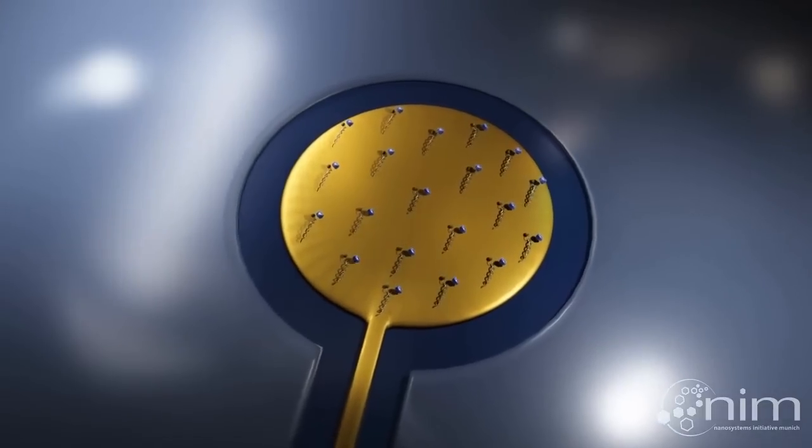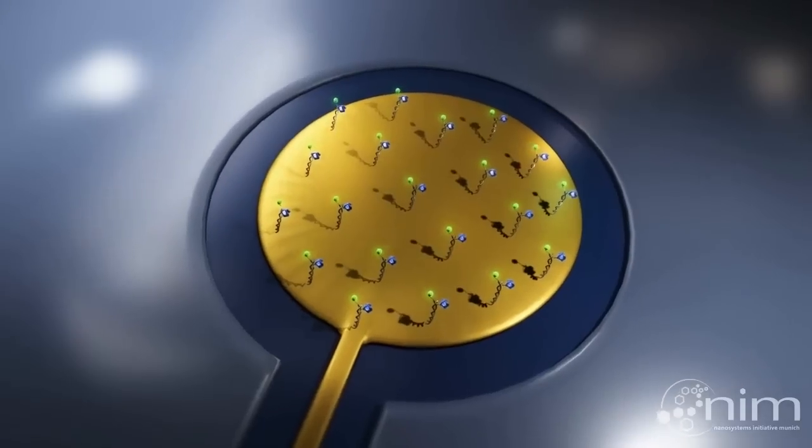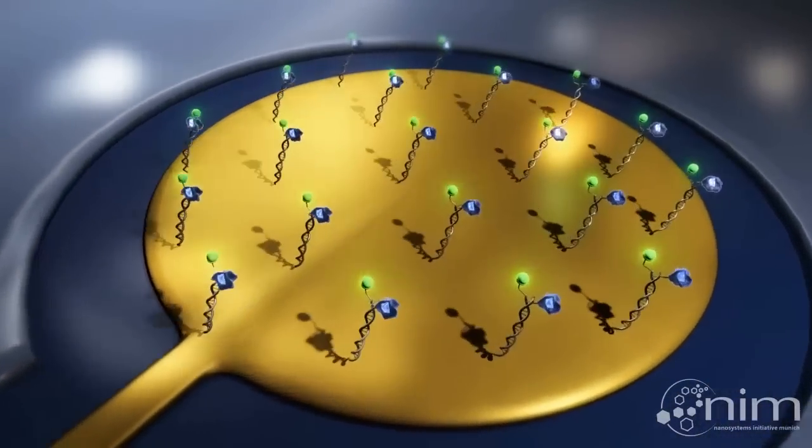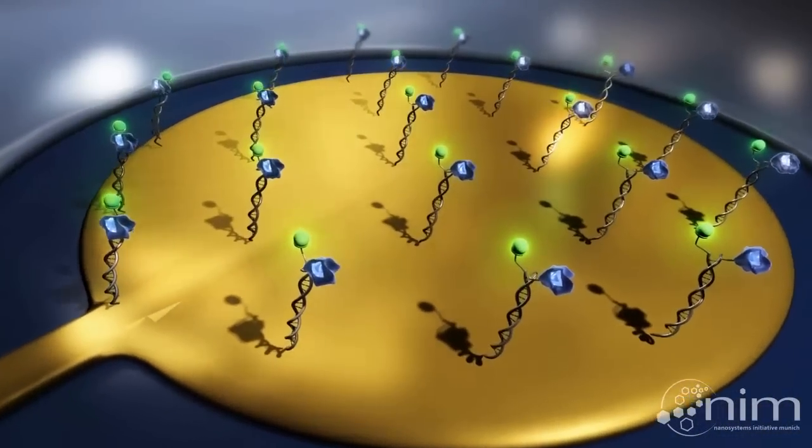As the SwitchSense analyzer applies alternating voltages to the electrode, the negatively charged DNA is repeatedly attracted to and repelled from the surface.